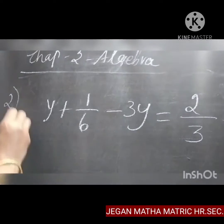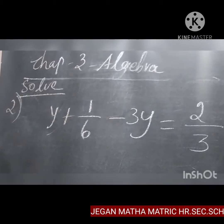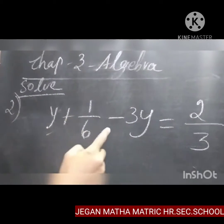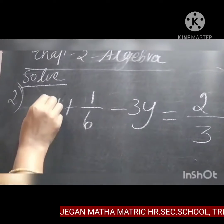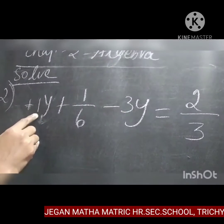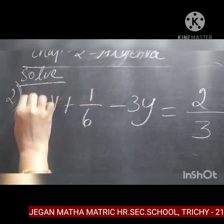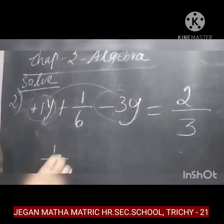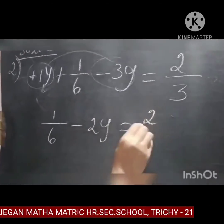Now let us see the second problem. You have to find out the value of the variable. The equation is: y plus 1 by 6 minus 3y equal to 2 by 3. See the left hand side — here 1y, that is understood, plus 1. There is no coefficient shown, so plus 1y here and minus 3y.